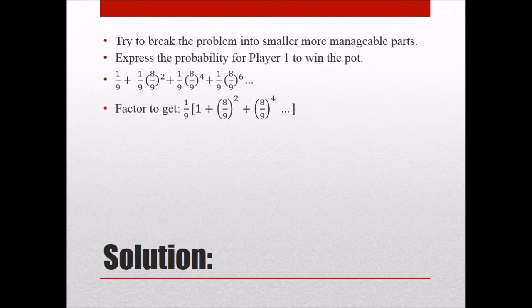And if we try and find the common ratio, remember that it's the second number over the first number. So eight over nine squared over one is just eight over nine squared. And we're asking ourselves, is this an infinite geometric series or a finite geometric series? And we know that it's infinite because it could go on indefinitely.